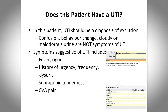We see on the units that nurses will send specimens because the urine looks cloudy or smells quite strong. Symptoms suggestive of a UTI are: fever, rigors, a history of urinary symptoms — which clearly you can't get from this patient — suprapubic tenderness or discomfort, and CVA tenderness or discomfort.